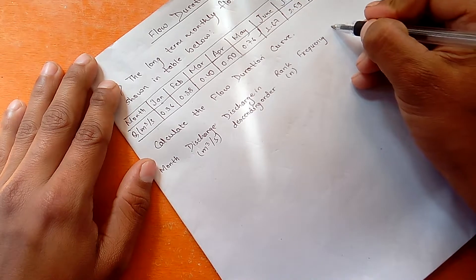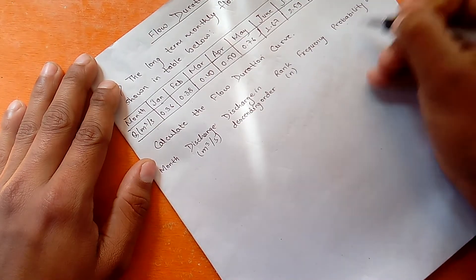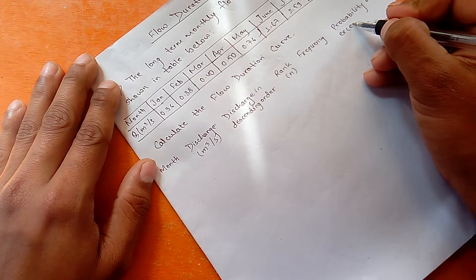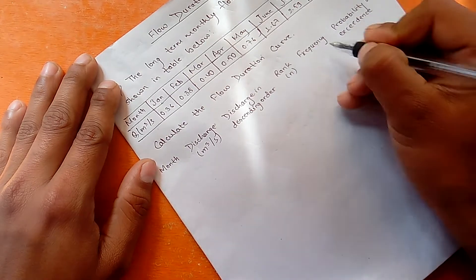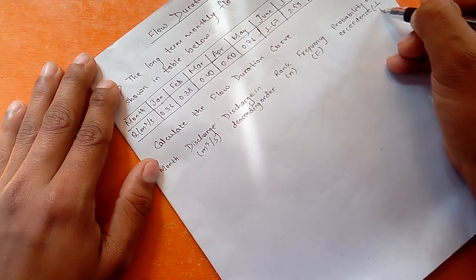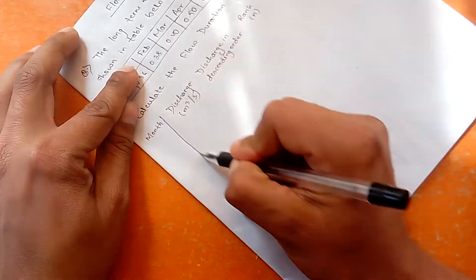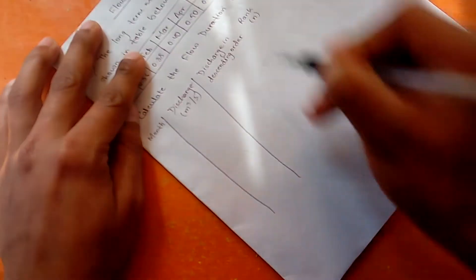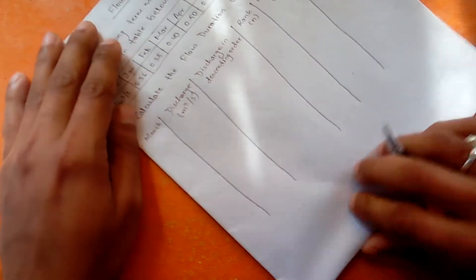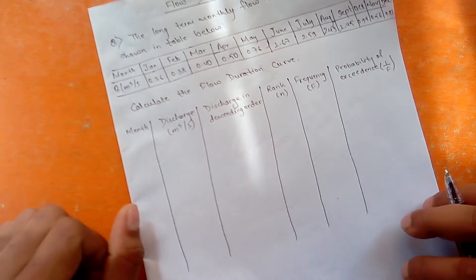Then we have to write the probability of exceedance. The exceedance frequency is denoted by capital F, and the probability of exceedance is 1/F. Now let's draw the table and rewrite the months and discharge values given in the question.